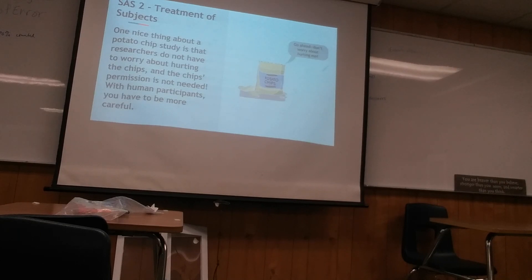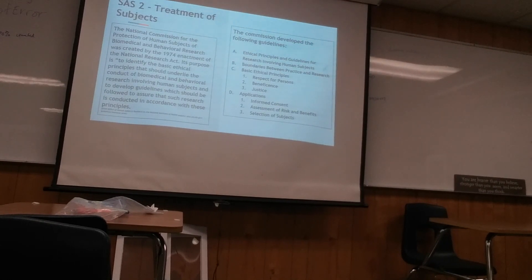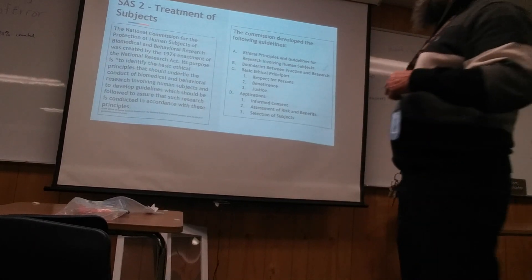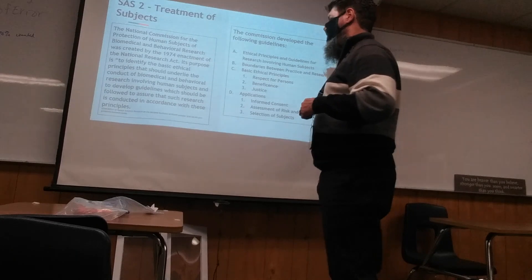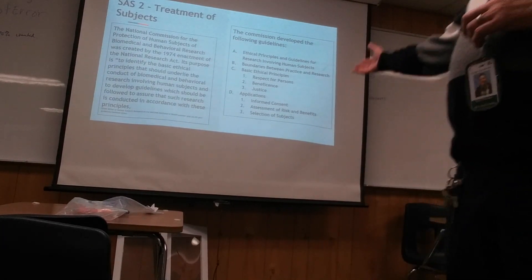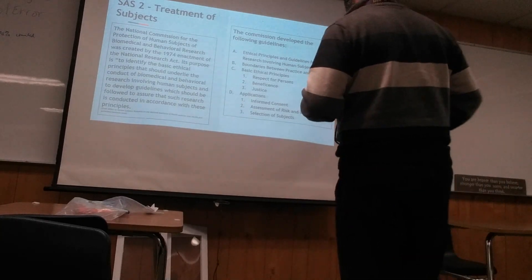The National Commission for Protection of Human Subjects of Biomedical and Behavioral Research was created in 1974 through enactment of the National Research Act. Its purpose is to identify basic ethical principles that should underlie the conduct of biomedical and behavioral research involving human subjects, and to develop guidelines assuring that such research is conducted in accordance with those principles.